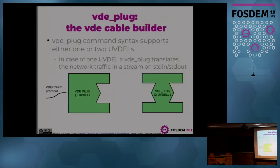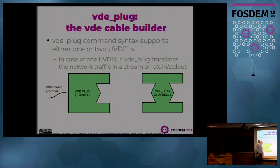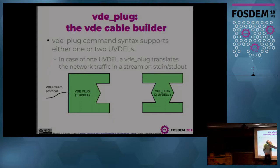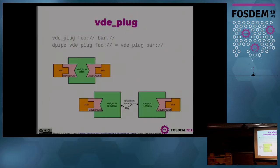One interesting tool is vdeplug, which is just a tool that has a libvdeplug client and a plugin, and it converts all communication to a standard stream — standard input and standard output. So you can use a tool like the double pipe to connect two plugs, or you can have a plug with two slots for libvdeplug entities to connect — creating a cable.